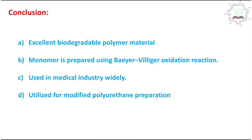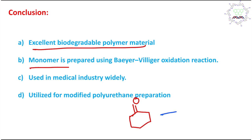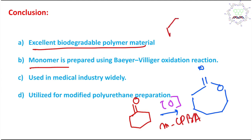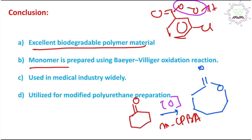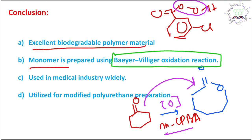In conclusion, PCL is an excellent biodegradable polymeric material. The monomer, epsilon-caprolactone, is prepared using the Baeyer-Villiger oxidation: cyclohexanone is oxidized using mCPBA (meta-chloroperoxybenzoic acid). The peroxy linkage is the reactive oxidizing agent that converts the ketone into the corresponding cyclic ester or lactone. This name reaction is therefore very important, and students should study name reactions carefully.